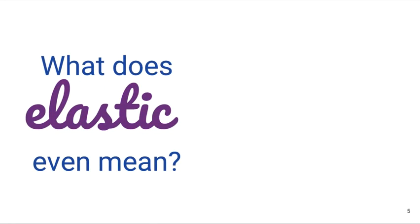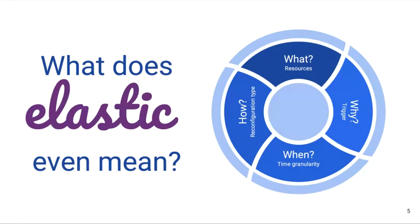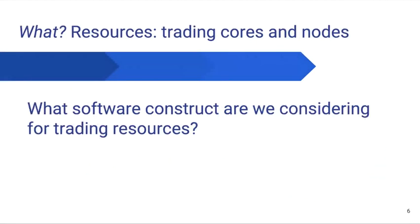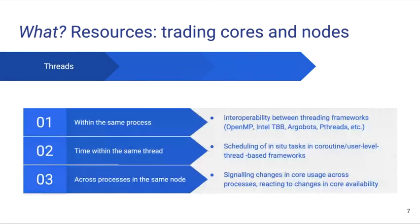But what does elastic even mean? We can consider what resources we are talking about — what resources we would like to add to or remove from the analysis task. We can consider why we want to do that, when, and how. The 'what' question is a question of resources. We can ask what software constructs we are considering for trading resources. For instance, we might want to trade threads with the simulation — if we run the analysis inside the simulation processes, maybe the simulation is using a threading framework like OpenMP, Intel TBB, or pthreads, and our in-situ analysis is also using a threading framework, requiring interoperability if they differ.